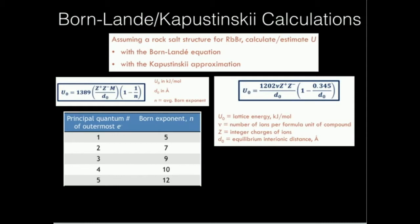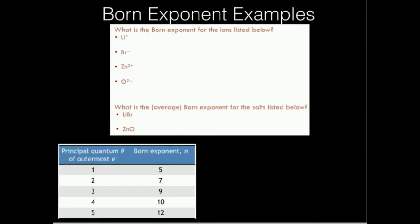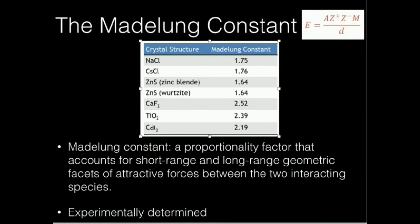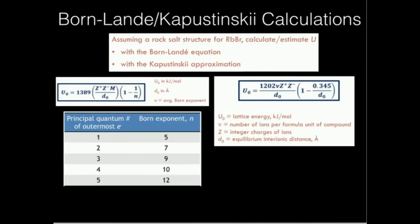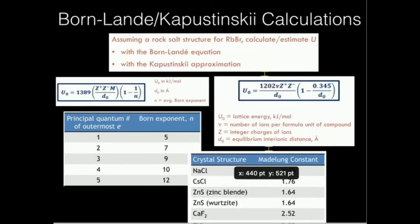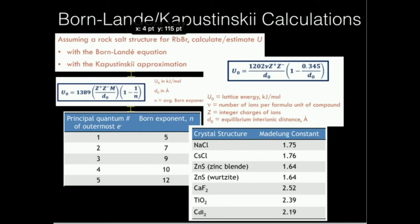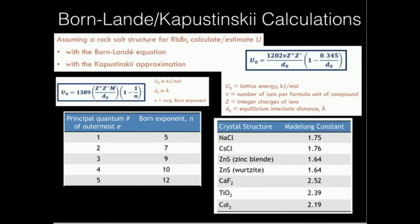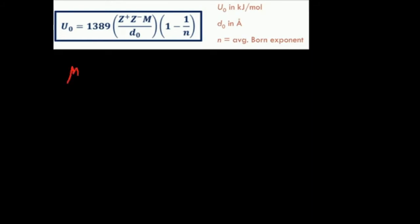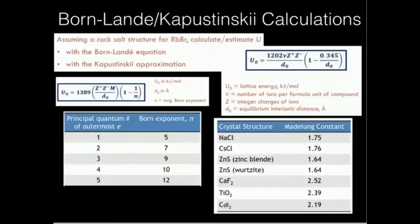When you see a rock salt structure, that means sodium chloride — it doesn't matter what the compound is. Rock salt structure means sodium chloride, so our Madelung constant is going to be 1.75. Here's the table of Madelung constants — we can confirm that. So our Madelung constant M equals 1.75.